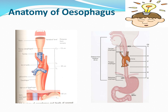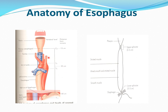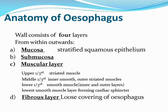The esophagus has three constrictions: at the level of C6, the cricopharyngeus, which is the narrowest part of the GIT tract; then a constriction at the level of the arch of aorta and crossing of the left bronchus, at 23 to 25 centimeters; and at the level of T10 when it passes through the diaphragm.